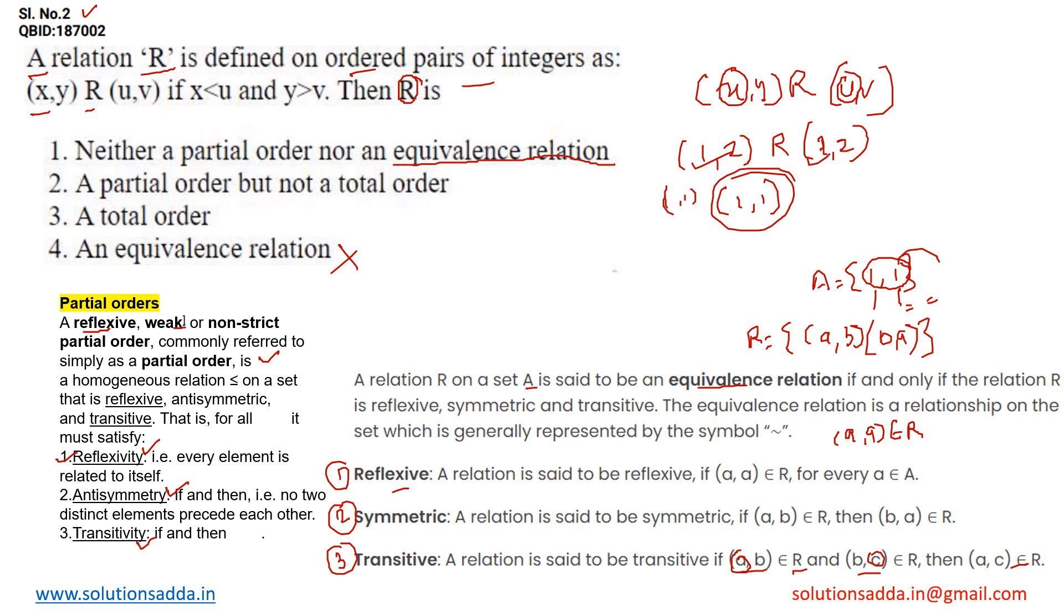We can directly answer this question with the first option: this relationship neither satisfies the partial order nor an equivalence relation. So the correct option for this question will be option number one.